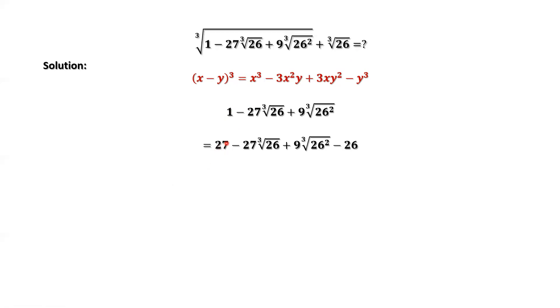Now, we can rewrite this part to fit this part. 27 equals 3 to the power 3. This 27 is 3 times 3 squared. This 26 equals the third root of 26 to the power 3. Now we are ready to apply this binomial formula.